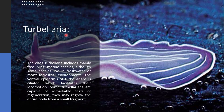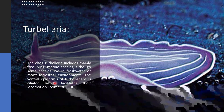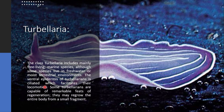The first class is Turbellaria. This class includes mainly free-living marine species, although some species live in fresh water, moist, and terrestrial environments. The ventral epidermis of Turbellaria is ciliated, which facilitates their locomotion.